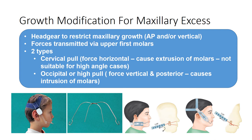Growth modification for maxillary prognathism usually involves using a headgear to restrict maxillary growth in the AP direction, the vertical direction, or a combination of both, with forces transmitted via the upper molars. The cervical pull headgear directs force more horizontally, causing molar extrusion and is not suitable for high-angle cases. The occipital or high-pull headgear directs force more vertically and posteriorly, causing molar intrusion, and is suitable for high-angle cases.